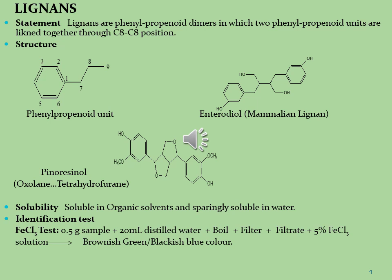Lignans are mostly soluble in organic solvents and sparingly soluble in water. The identification test of lignans is carried out using ferric chloride test. In this test, we take 0.5 gram of sample dissolved in 20 ml of distilled water. The solution is boiled and filtered. After filtration, we add 5% ferric trichloride solution. At the end, we observe a purplish green and blackish blue color, which indicates the presence of lignan molecules.